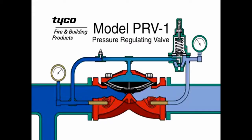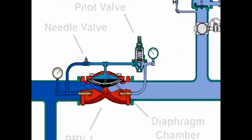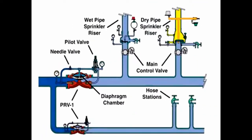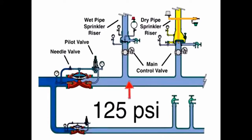The model PRV1 is a pressure regulating valve. The valve is shipped fully trimmed and ready to install. The PRV1 outlet is factory set to a pressure of 125 PSI.